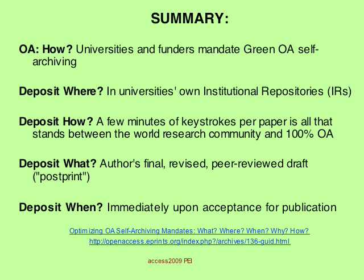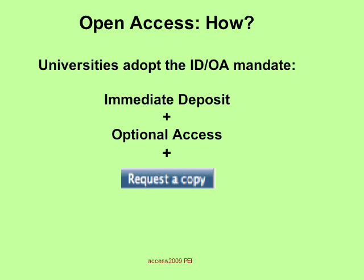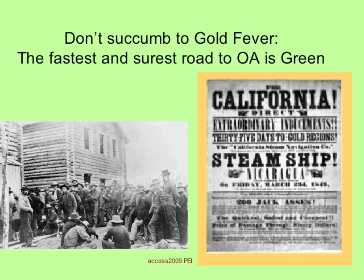Here's an OA summary. How to provide open access? Universities and funders mandate green open access self-archiving. Mandate deposit where? In the university's own institutional repositories. Deposit how? A few minutes of keystrokes per paper. Deposit what? The author's final revised peer-reviewed draft — the postprint. Deposit when? Immediately upon acceptance for publication. The immediate deposit optional access mandate is the default compromise mandate that fits every case and is easiest to reach consensus on. If you can't reach consensus on a stronger mandate quickly, adopt IDOA. Above all, don't succumb to gold fever — the fastest road to open access is green. Gold has been distracting us for years. Open access does not mean open access publishing; it means open access, and it's about access.